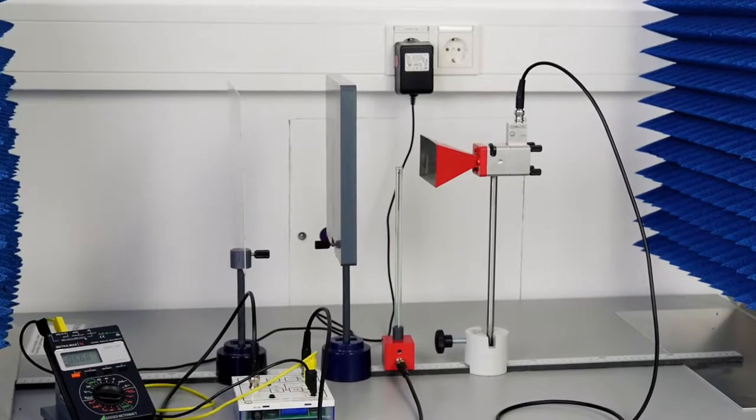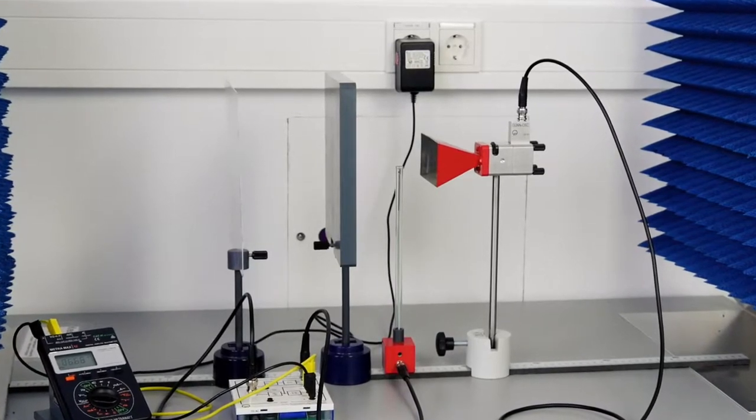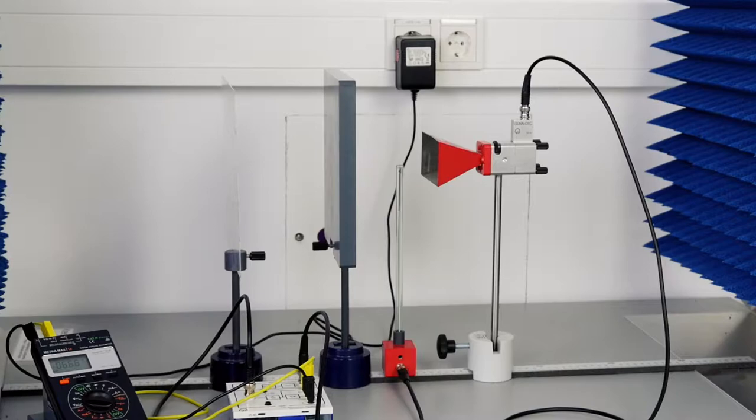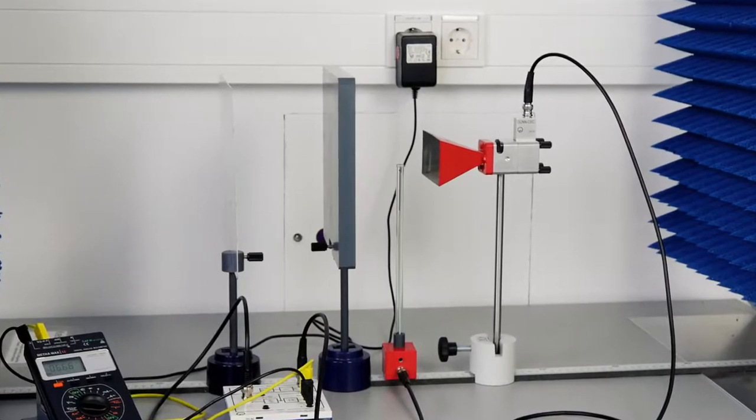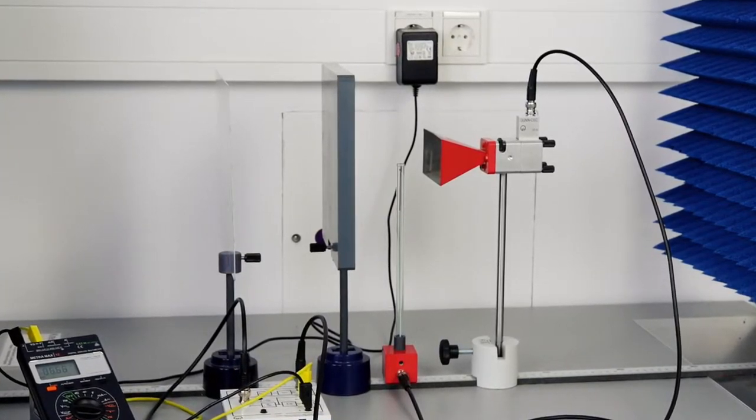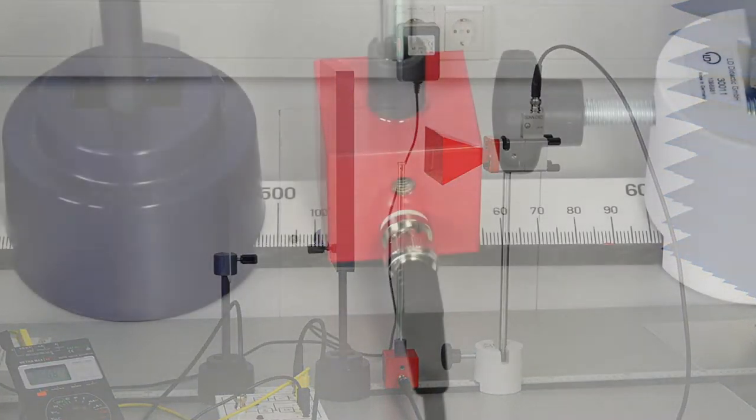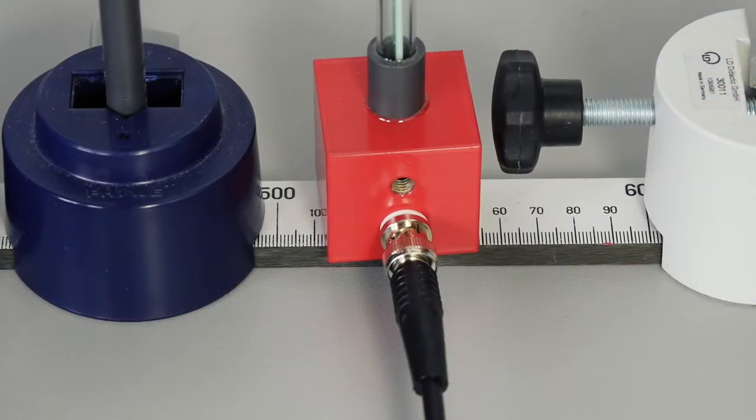In this experiment, microwaves are generated from which a standing wave is created in two different ways. Their field pattern is determined by means of an E-field probe. The experimental part, wavelength determination at standing microwaves.